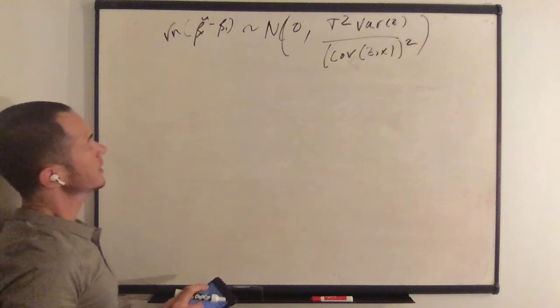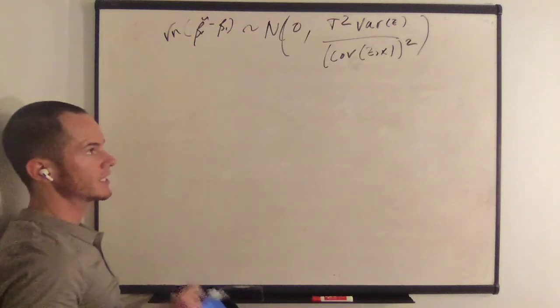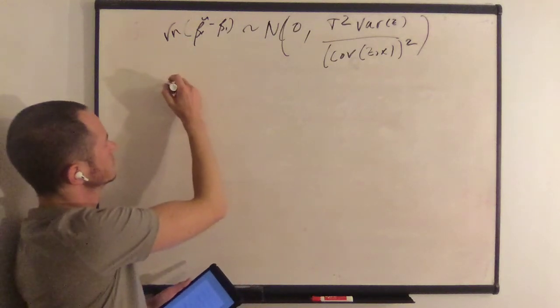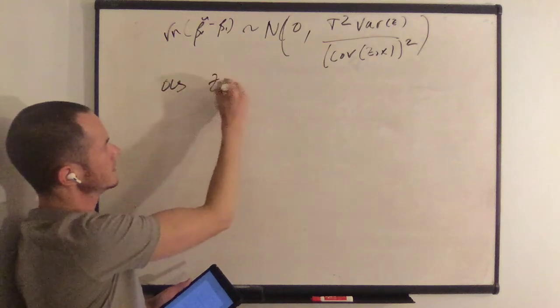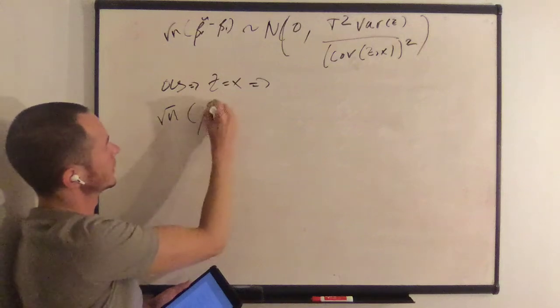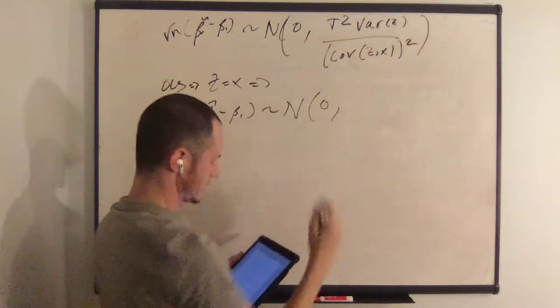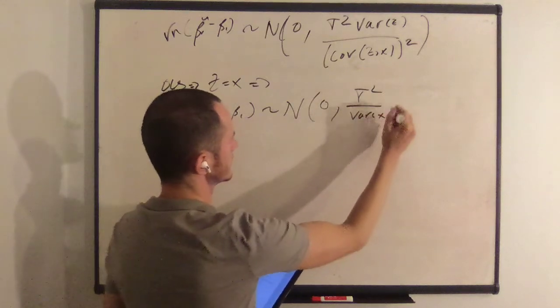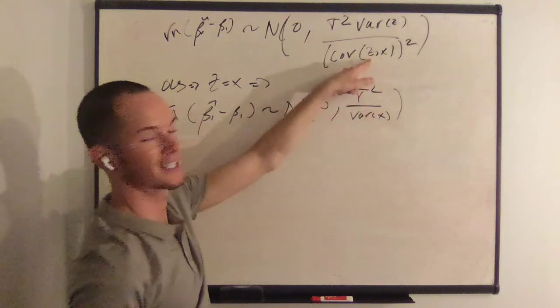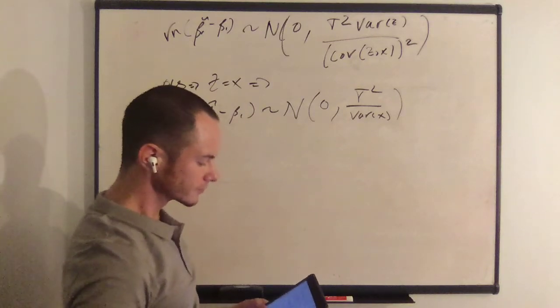And the asymptotic covariance of the OLS estimator is similar except for the case that z is equal to x. For OLS, z equals x. So that the square root of n of beta 1 hat minus beta 1 is normally distributed 0, and you have then sigma squared over variance of x. Because that would be sigma squared over variance of x over variance of x squared. Because the covariance between x and x is the variance of x. So you'd have the variance of x squared and those two variances cancel out.